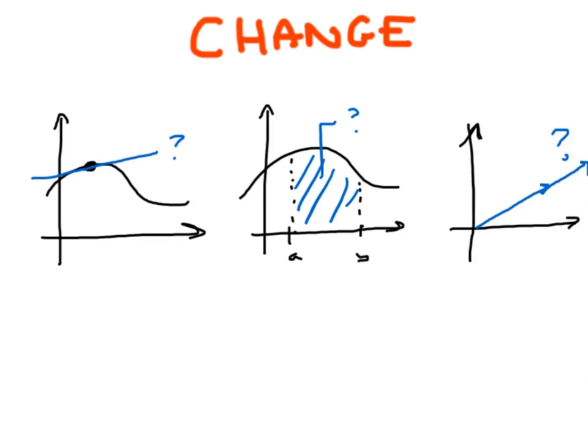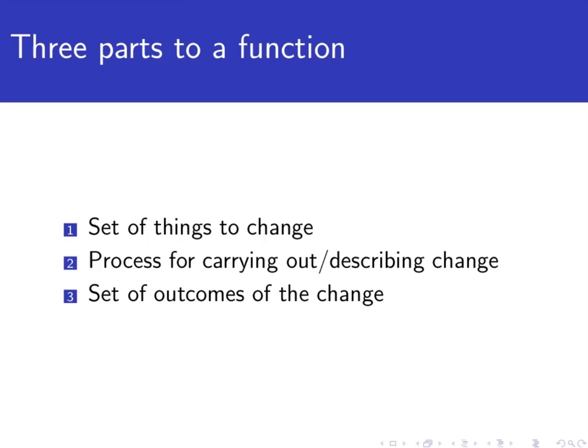And functions really consist of three parts. First, there are the things that we intend to change. We usually think of those things as belonging to a set. Second, there is a rule that we follow that tells us what to do to those things to change them. And then third, there are the things that the objects in part one change into. Those also belong to a set, possibly a different one.